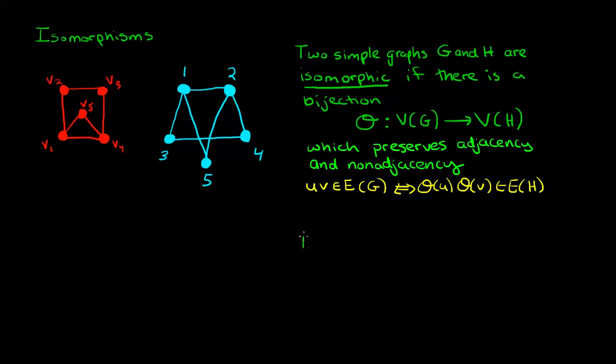A nice piece of notation we use is G equals, with a squiggle mark on top, to H, to mean that G and H are isomorphic.